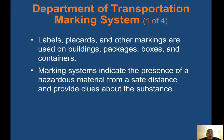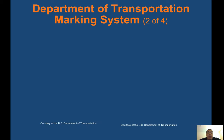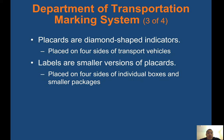Department of Transportation marking system, or DOT: labels, placards, and other markings are used on buildings, packages, boxes, and containers. Marking systems indicate the presence of a hazardous material from a safe distance and provide clues about the substance. Placards are diamond-shaped indicators placed on all four sides of transport vehicles. Labels are smaller versions of placards placed on four sides of individual boxes and smaller packages.